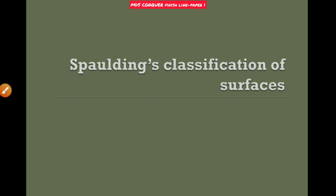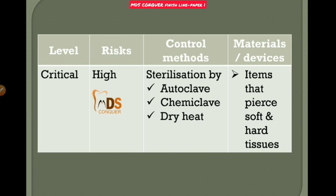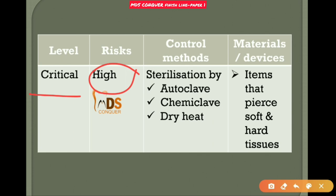Spaulding's classification is important. Critical instruments have a high risk of transmission and must be sterilized by autoclave, chemical, or dry heat. Critical instruments are items that pierce soft and hard tissues, such as scalers.